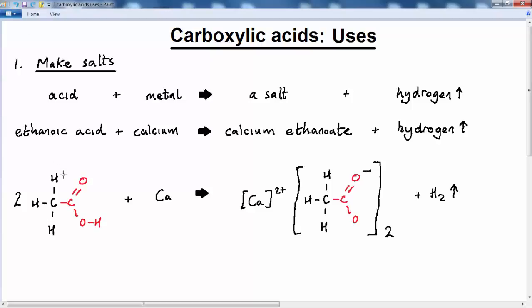Looking at the structural formula. So you've got the structural formula for ethanoic acid with the carboxyl group here shown in red. So what's going to happen is that the calcium is going to displace the hydrogen here from the carboxylic acid. That's going to combine with another hydrogen to produce the hydrogen gas. And what we'll be left with is a salt.